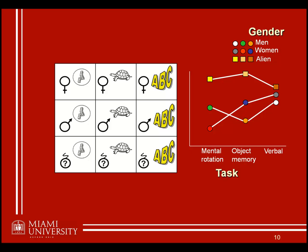If we change both factors to have three levels, this becomes a 3 by 3 factorial design, identified with three rows and three columns. If we were to add another factor entirely, it would be very difficult to plot on a two-dimensional screen. Hopefully you are now able to identify these different types of factorial designs, accurately label examples, and understand how results from these designs would be presented in a graph.